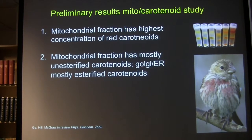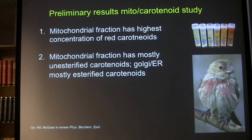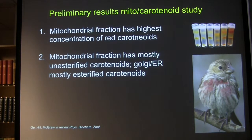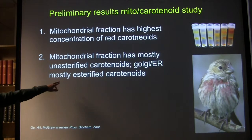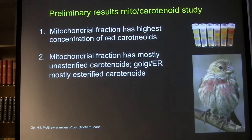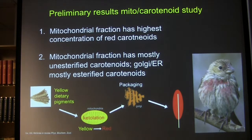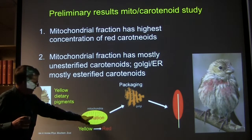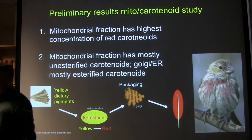In the mitochondrial fraction, you get carotenoids that are unesterified, whereas outside the mitochondria — probably in the Golgi and endoplasmic reticulum — you get carotenoids that are esterified. Carotenoids are esterified to stabilize them; they're not reactive when esterified. You unesterify them to make them reactive. So where they're being synthesized they're unesterified, and where they're being packaged and transported they're esterified. It looks like carotenoids are being ingested, moved to the mitochondria, converted to red pigments, and then shipped out to the feathers.